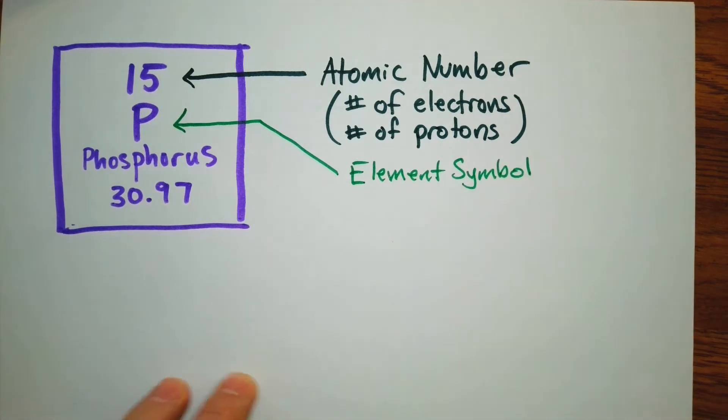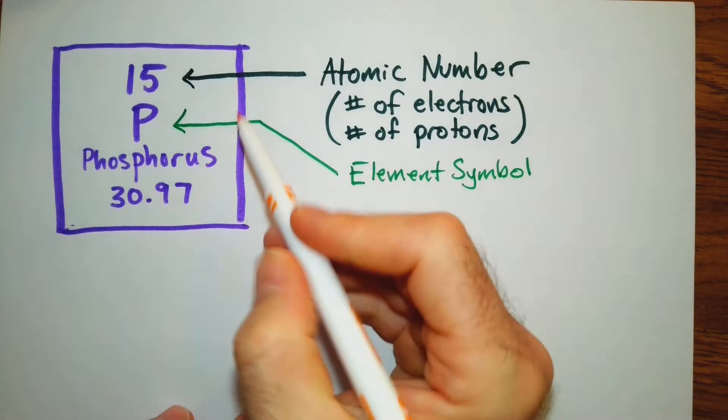The first letter will always be capitalized. And if there is more than one letter, the subsequent letters will always be lower case. And then here, of course, we have the name of the element.